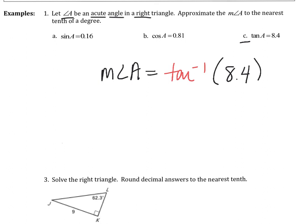But I can skip over the fact that I used tan inverse on the tan function to get the measure of angle A all by itself. And in this case, the measure of angle A is 83.2.